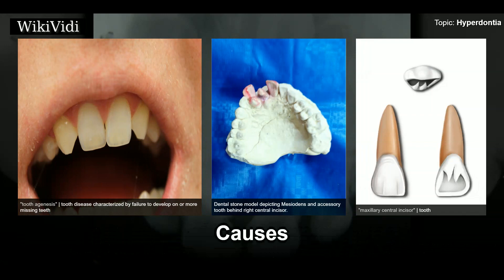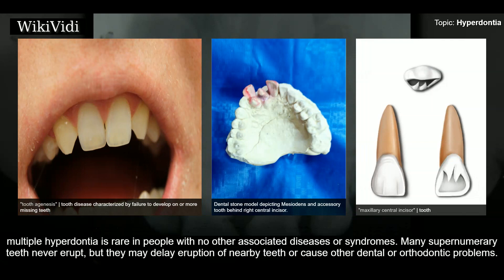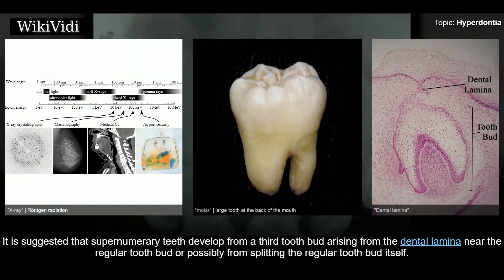There is evidence of hereditary factors along with some evidence of environmental factors leading to this condition. While a single excess tooth is relatively common, multiple hypodontia is rare in people with no other associated diseases or syndromes. Many supernumerary teeth never erupt, but they may delay eruption of nearby teeth or cause other dental or orthodontic problems. It is suggested that supernumerary teeth develop from a third tooth bud arising from the dental lamina near the regular tooth bud, or possibly from splitting the regular tooth bud itself.